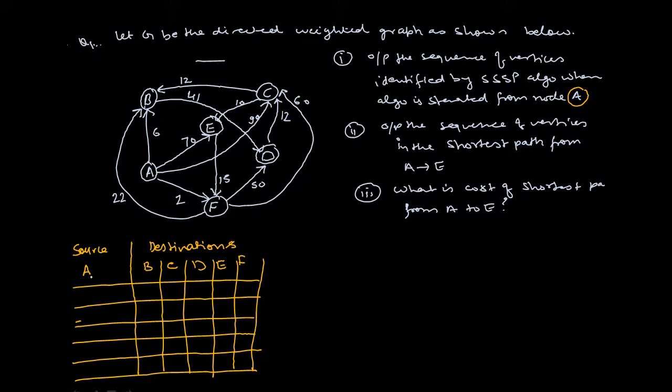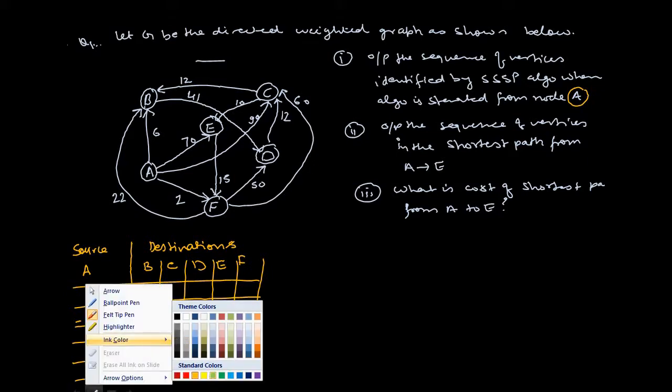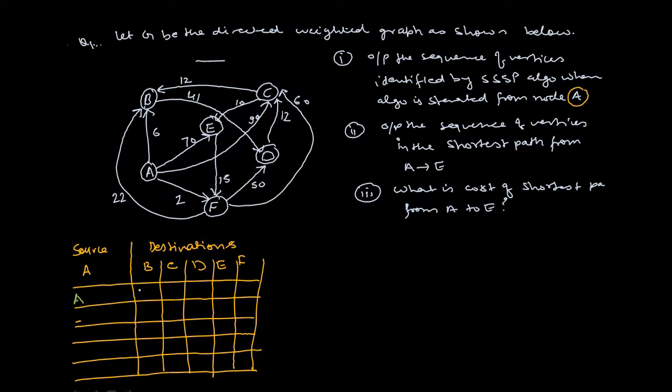Because the starting vertex is A, I need to find out the vertices which is directly connected to A. A to B, is there any path? Yes, there is a path with cost 6. A to C, yes there is a direct edge with cost 90. A to D, there is no direct edge so I write infinity, maximum cost. A to E, direct edge is 70. Then A to F, yes there is a direct edge 2. I find out the minimum between these and the minimum is 2. I add this vertex into my path. So now path is updated as A, F.